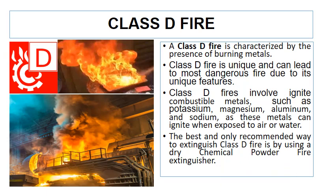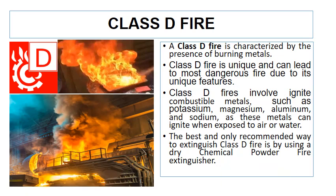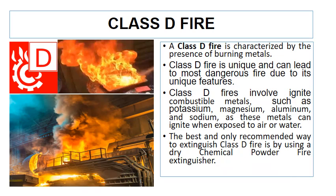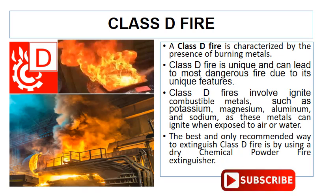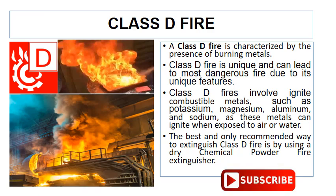Class D fire is characterized by the presence of burning metals. A Class D fire is unique and can lead to the most dangerous fire due to its unique features. It involves ignited combustible metals such as potassium, magnesium, aluminium, and sodium, because these metals can ignite when they are exposed to air or water. The best and only recommended way to extinguish a Class D fire is by using a dry chemical powder fire extinguisher.